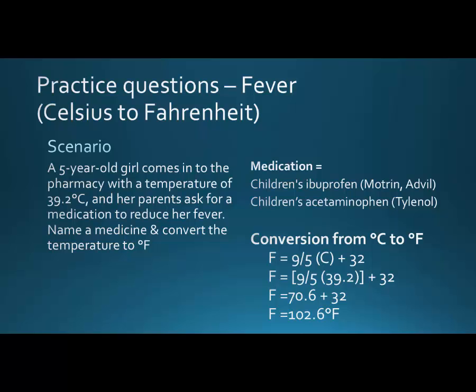Now we'll add another step and put the Celsius value in brackets. So 9/5 times the Celsius temperature plus 32: 9/5 times 39.2 gives 70.6, and then we add 32 to get 102.6. We do this to be careful not to add the 32 first — we need to keep the order of operations: PEMDAS — parentheses, exponents, multiplication, division, addition, subtraction.